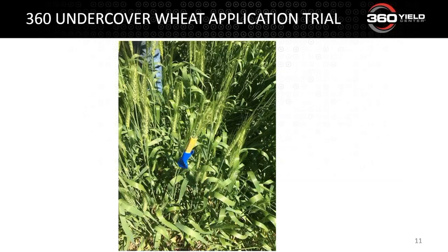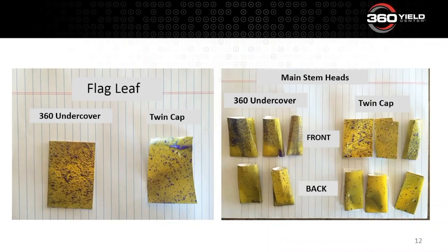Jumping on to a different topic around wheat treatment — last year, Josh Messer, the RAM in the Dakotas, did a study where they took water-sensitive paper and taped it to heads and also on lower tillers. They compared a twin cap system, which is very common out there, over the top versus a 360 Undercover. They dragged the Undercover right through the top of the plant, kind of displacing the head as they spray. Here are some results from that water-sensitive paper.